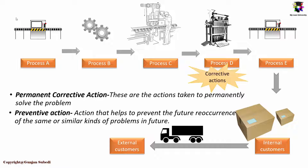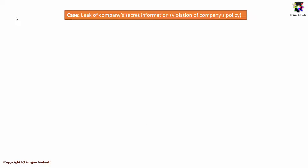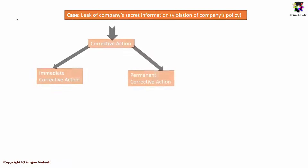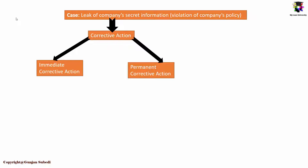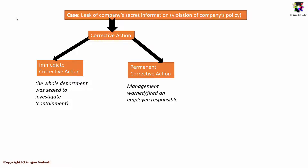Let me make you more clear about the permanent and preventive actions with an example. Suppose we are dealing with the case where there is a leak of a company's secret information, which is clearly a violation of the company's policy. As the immediate corrective action, the whole department was sealed to investigate — this is called containment. As a permanent corrective action, when the cause of the problem — one employee who was violating the company's policy and leaking the secret information — was identified, the management either warned or fired that employee.